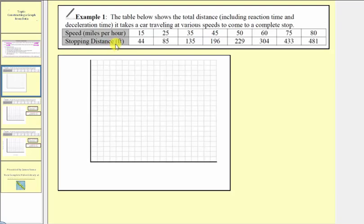To help with this, remember earlier we mentioned that the input variable controls the output variable or we can also say the output variable depends on the input variable. So because the speed controls the stopping distance or we can say that the stopping distance depends on the speed, the input variable is speed in miles per hour and the output variable is stopping distance in feet.